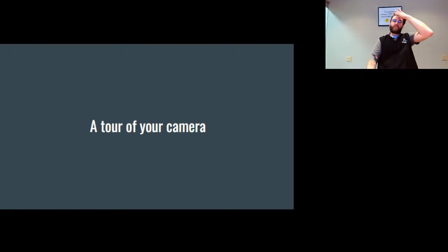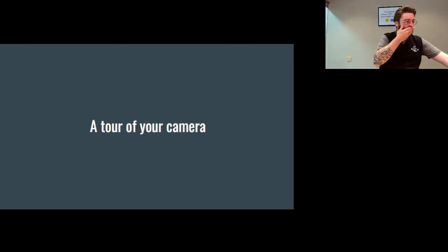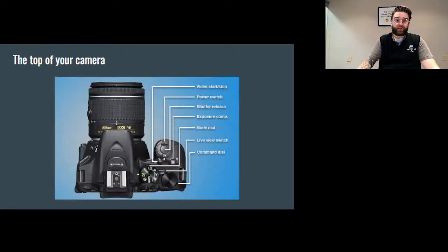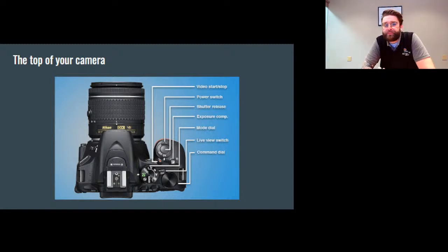Let's get into a tour of your camera. This is probably the most in-depth section where we really talk about all the buttons and knobs and get an idea of where things are located. I will warn you — it's a Nikon DSLR, so the button layout might be a little different than what you're used to, but all cameras have very similar button functions and layouts. We start with the video start/stop button on top — a red dot that starts and stops video once the camera is on. Below that is the power switch to turn it on and off, typically near the shutter release button.